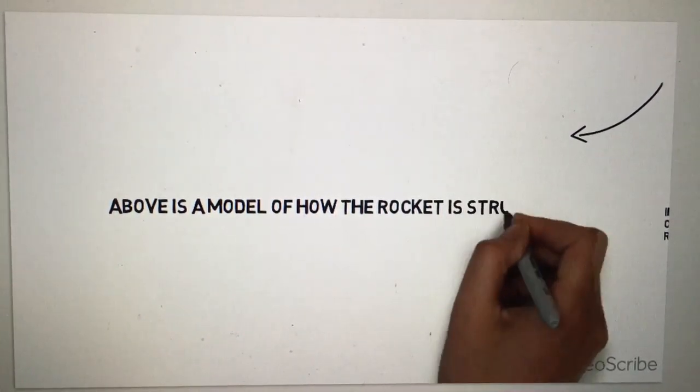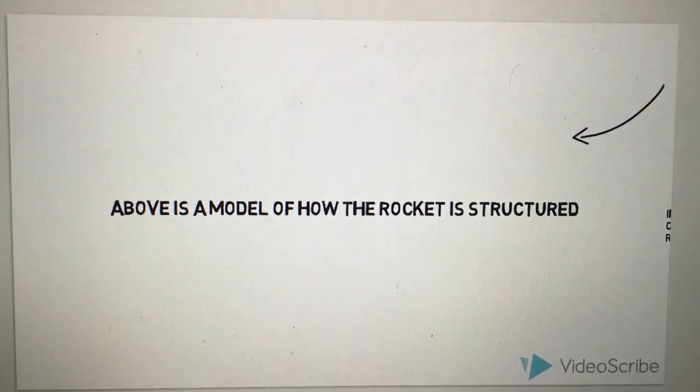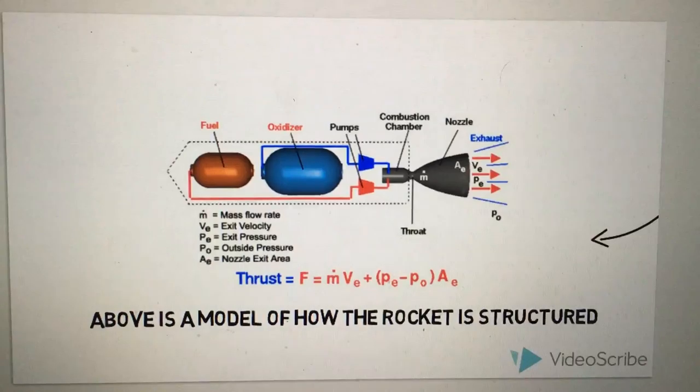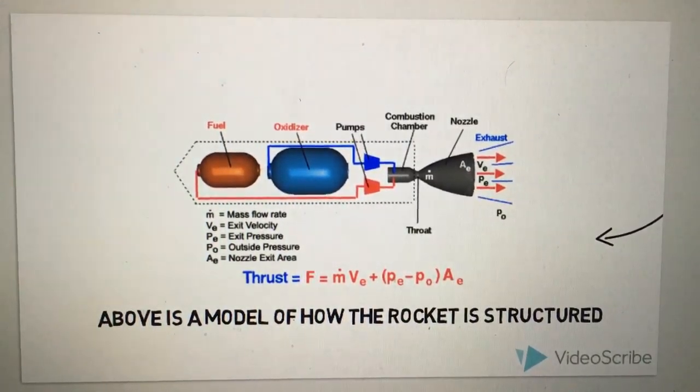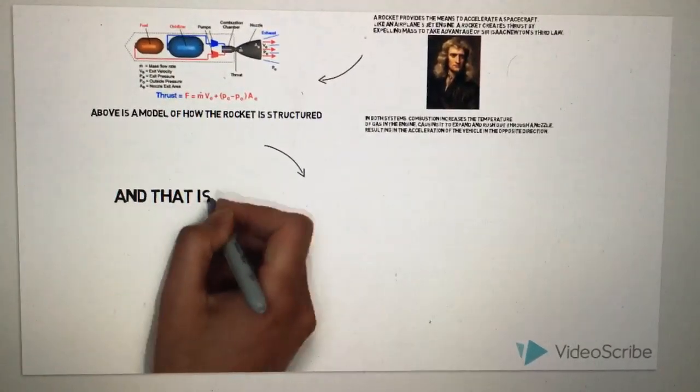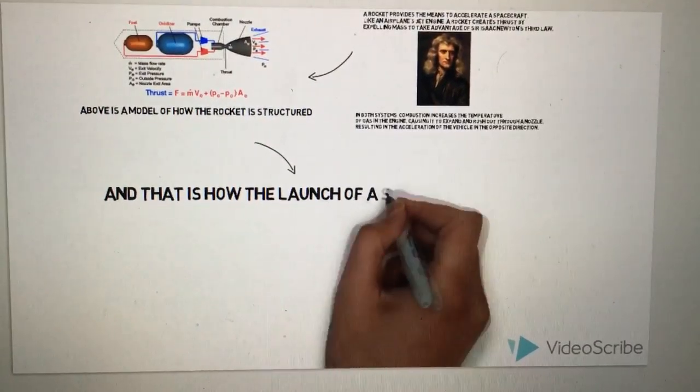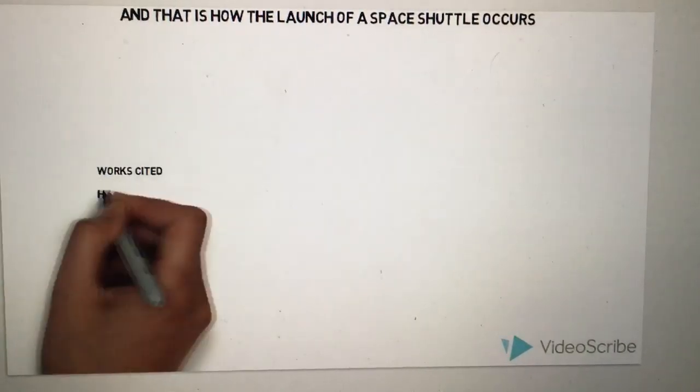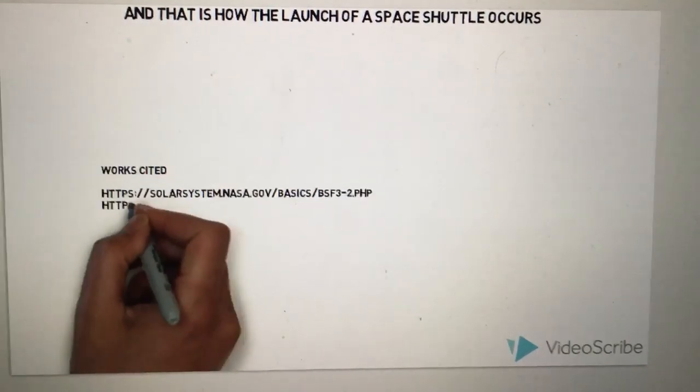Above is a model of how the rocket is structured. And that is how the launch of a space shuttle occurs. Thank you, and let's dominate life with Mr. Langley.